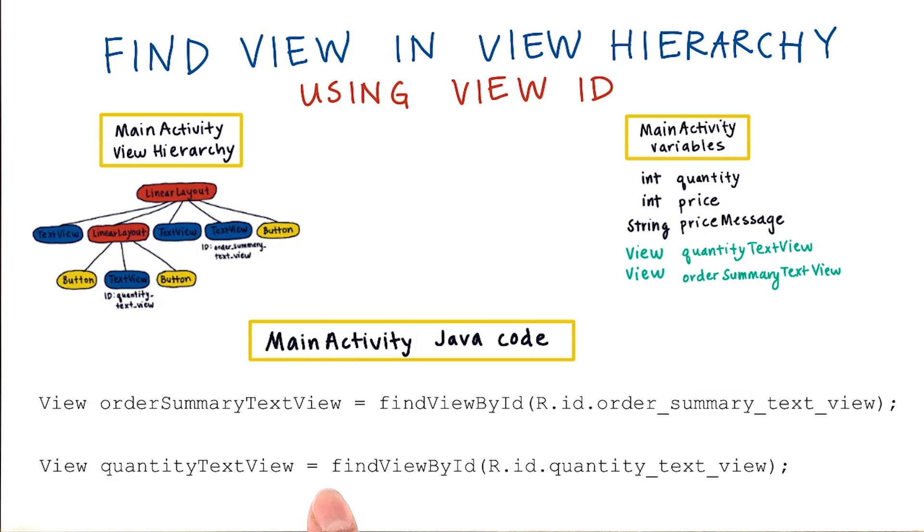Later in the main activity, we can also call FindViewById, and then pass in this resource ID, r.id.quantityTextView, which refers to this text view here. This is a text view in the quantity picker. When this is called, the activity will search through the view hierarchy, and then try to find the view with this ID, and then it will return this view, and then we can store that in a variable called quantityTextView. This variable also has a data type of view.